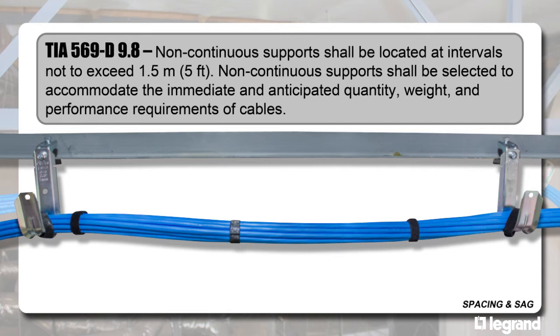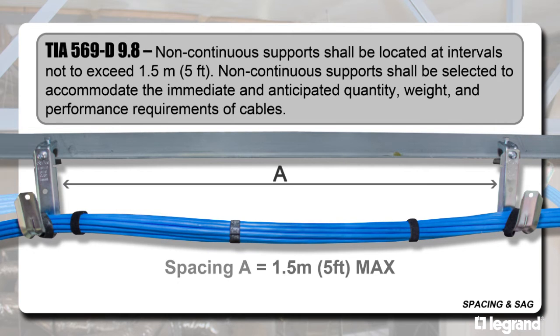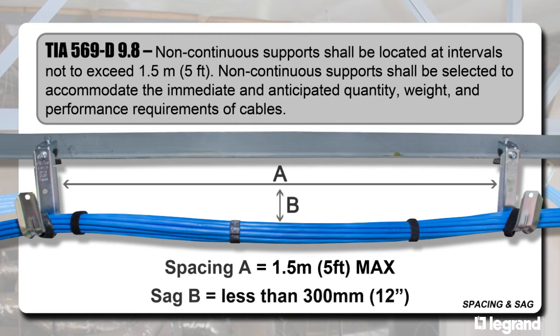The maximum allowable spacing between cable supports is about five feet. The cable tension should allow for no more than about a foot of sag between each support. It is best to stagger the spacing on a long run to prevent harmonic interference or crossover.